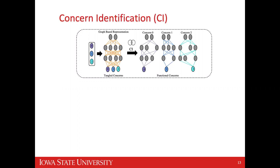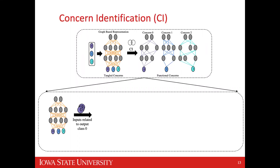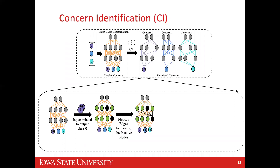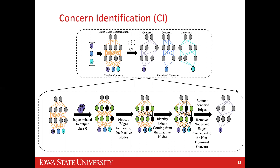To illustrate: the monolithic model has three tangled concerns for 0, 1, and 2. The goal of concern identification is to identify parts of the DNN responsible for classifying an image into each class. We give inputs related to a specific output class, identify which nodes are active or inactive based on activation functions, identify edges incident to inactive nodes, remove those edges, and build a small subgraph containing only the connections related to that input class.